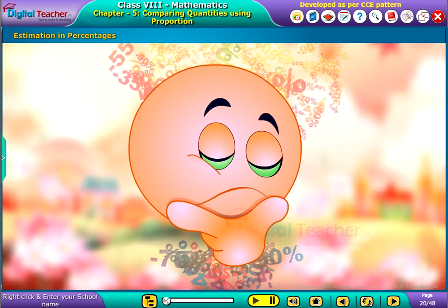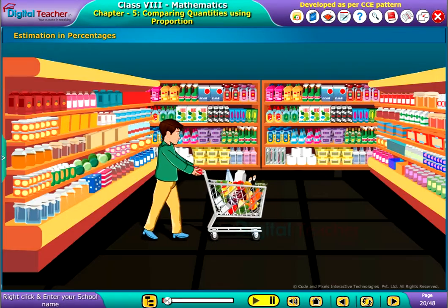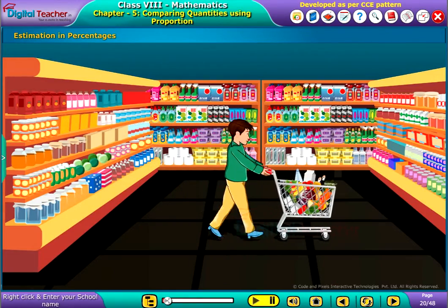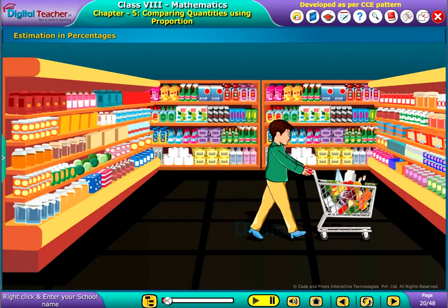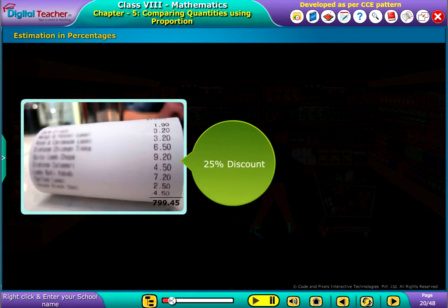Now we are going to discuss estimating in percentages. Let us consider a real-time scenario. You have shopped in a supermarket and the final bill is rupees 799.45. You were offered a discount of 25 percent on the total bill. How can you estimate the amount to be paid after discount?